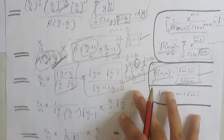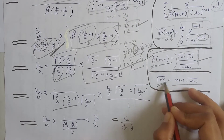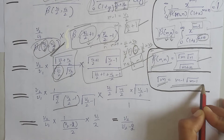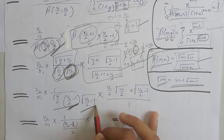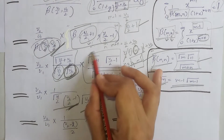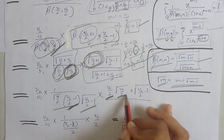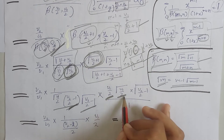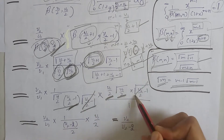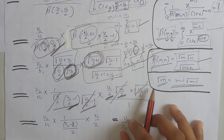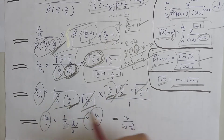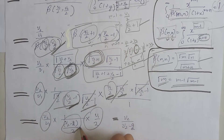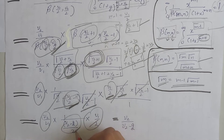We expand the gamma function using the identity Γ(x+1) = x·Γ(x). We expand the relevant gamma functions so that terms cancel: this term cancels with this term, and this term cancels with this term. After taking the LCM, the factor of 2 cancels with 2, and ν₁ cancels with ν₁.